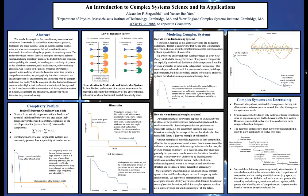Finally, even when armed with complex systems tools and insights, human understanding of most complex systems will inevitably fall short. To confront this reality, we must design systems that are robust to the ignorance of their designers by allowing for evolutionary processes to occur at multiple scales.